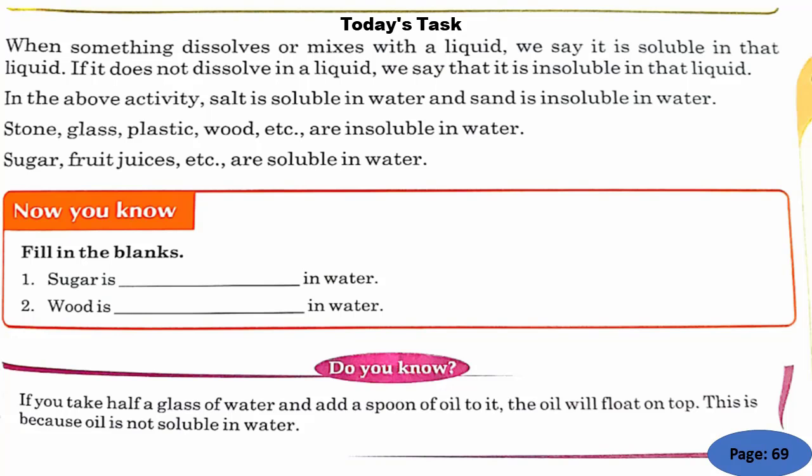So students, when something dissolves or mixes with a liquid, we say it is soluble in that liquid. Soluble means that something dissolves or mixes completely. If it does not dissolve in a liquid, we say that it is insoluble in that liquid.